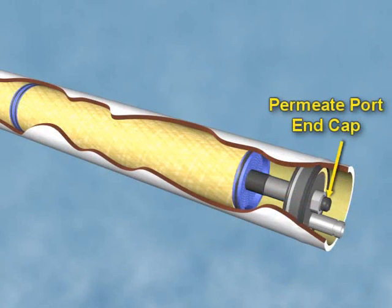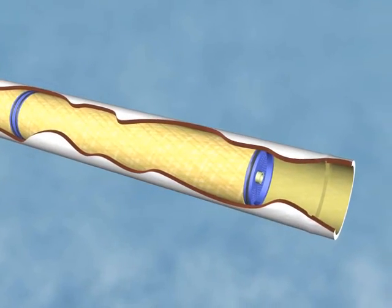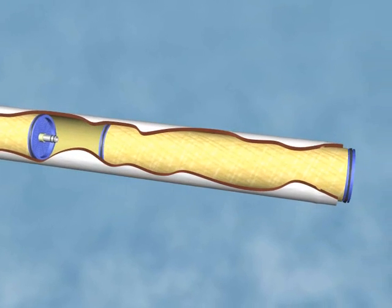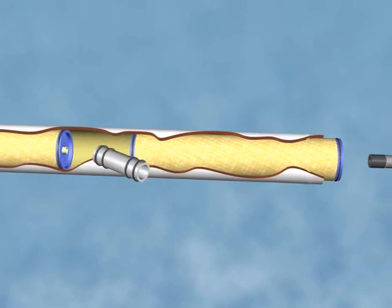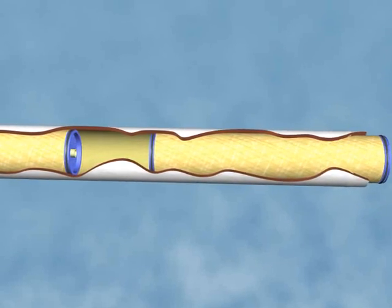Typically, one end of the pressure vessel's product tube is capped while the other is open to allow product water to exit. The couplers generally have double O-rings on each side. These O-rings on the couplers are used to prevent higher pressure feed water from passing into the product tube, thus contaminating the product water.